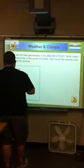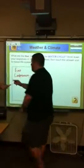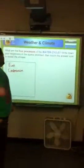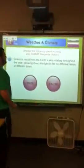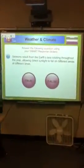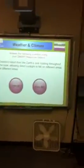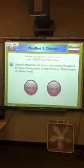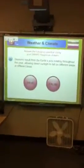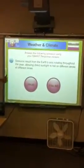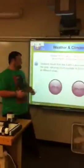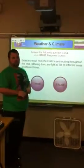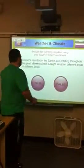Is he right on this too, class? Yes. Okay, we'll come back to that. Another question: seasons result from the Earth's axis rotating throughout the year, allowing direct sunlight to fall in different areas at different times. True or false? True.